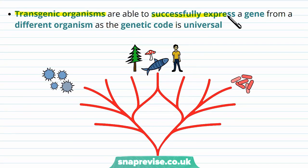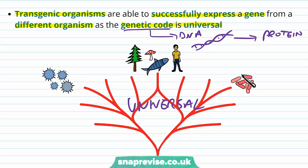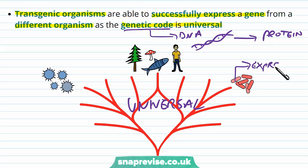Transgenic organisms can successfully express a gene from a different organism because the genetic code is universal. The genetic code refers to how DNA and its nucleotides code for a protein, because certain nucleotides in groups of codons code for the same amino acid. This is universal, meaning it's found in all organisms — prokaryotes, eukaryotes, protoctista, and all the different kingdoms. Because of this, if we take a gene from one organism and place it into another, that organism can read the code just as it would its own code, make the protein, and express the gene.